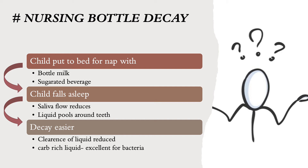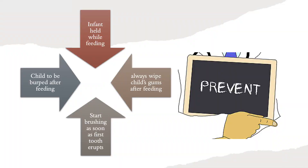This is why early childhood caries — or severe early childhood caries — is also called nursing bottle decay or baby bottle decay, because the nursing bottle is the major cause behind it. Prevention is the best cure, so let's discuss prevention first. While the child is feeding, you should hold the child in the feeding position so that pooling doesn't happen and whatever the child is drinking goes inside properly.